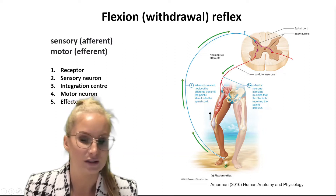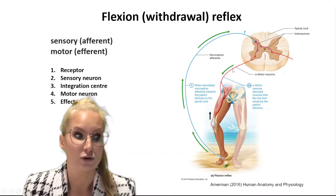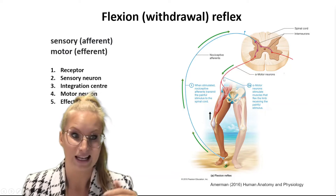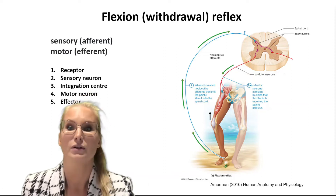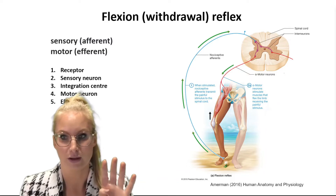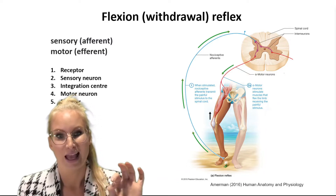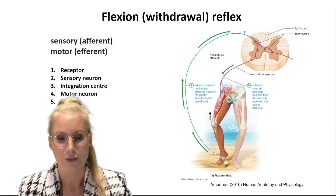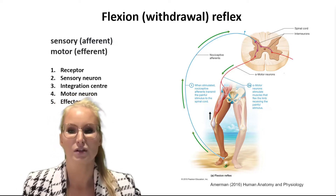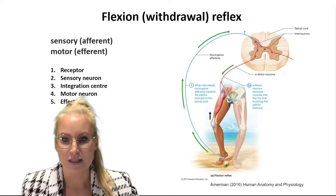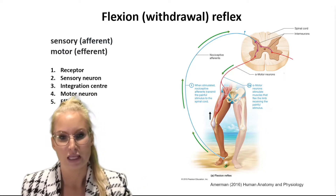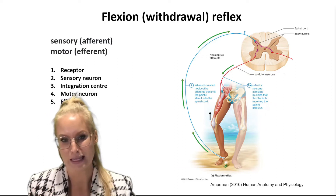The signal needs to go to a lower motor neuron, which is the fourth component of the reflex arc. To remember the difference between afferent and efferent signals: an efferent signal goes to the effector — efferent goes to the effector, E and E.